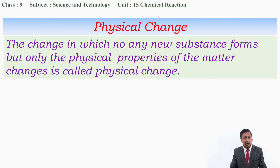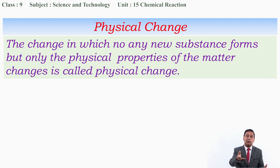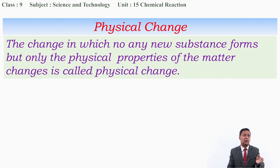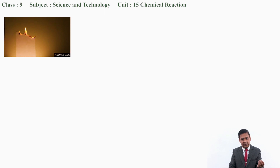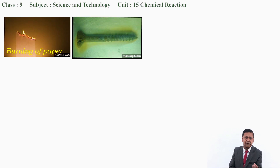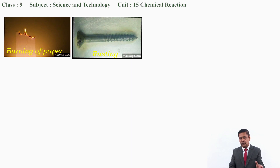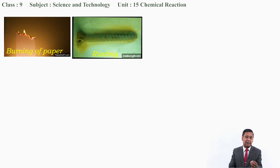We don't have to go into detail about physical change. Just for information on how physical change is different from chemical change, we are talking about it. Now I want to show some video clips related to another change. A piece of paper is burning — when it burns, smoke produces and ash produces. This is burning of paper. If a screw nail is placed for a few days openly, a reddish-brown colored powder appears on its surface, which is called rust, and this process is called rusting.